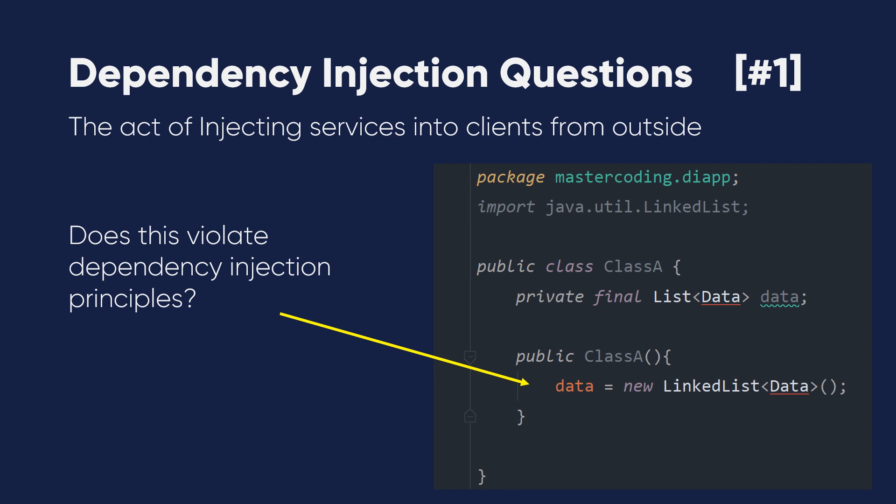Question one: if I need to create a list of data or objects, should I instantiate them inside the constructor? Does that violate dependency injection principles? The answer is no, we are not violating dependency injection — because passing the list into the constructor of Class A as we injected it before would be a bad concept, and there is a contradiction in that bad design. We'll learn how to solve these cases in coming videos.